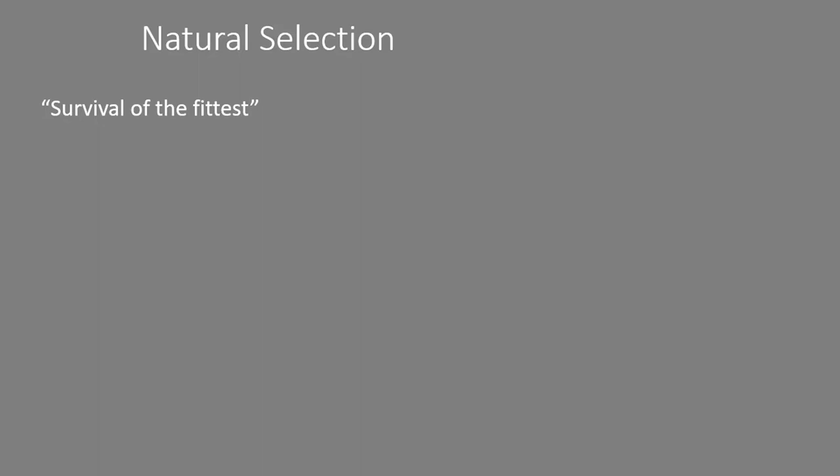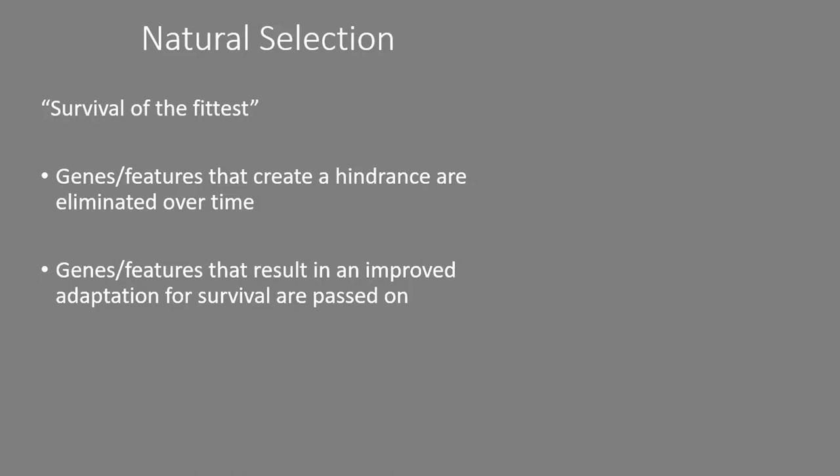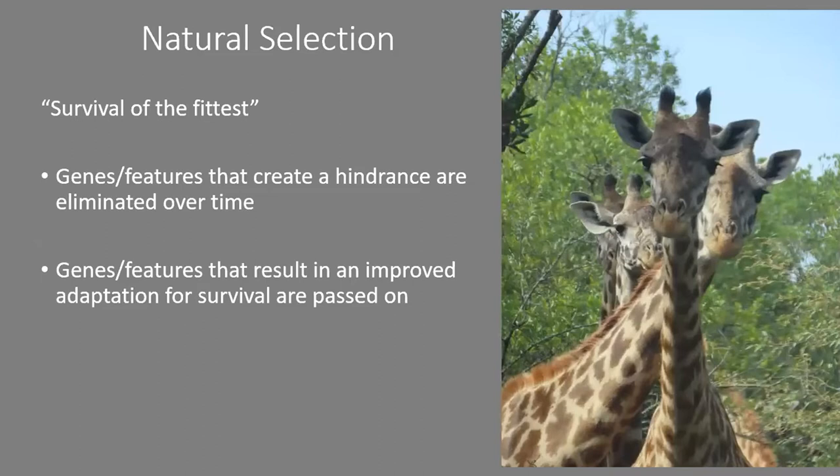A concept you've probably heard of is natural selection. A layman's way of putting it is 'survival of the fittest' — that's quite simplistic, but in general, genes which create a hindrance to survival get eliminated over time. If a species is not able to survive long enough to reproduce, there is no way for that gene to be passed on.